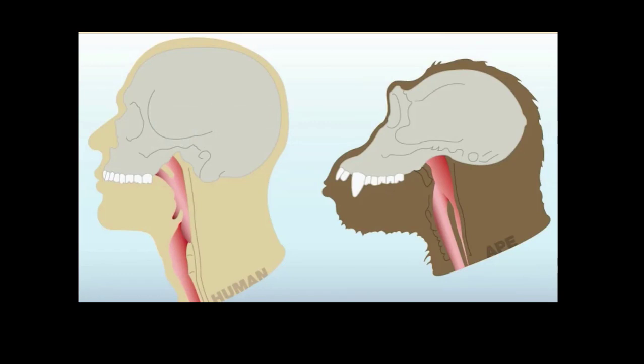Evolution can greatly modify existing structures, but it has to work within the limits of what is available. In people, the larynx sits lower in the throat than it does in other mammals. In this position, the larynx can produce a wide range of vocal sounds that are important for speech. The trade-off is we cannot breathe and swallow at the same time, which increases our risk of choking.